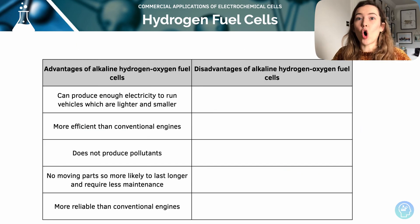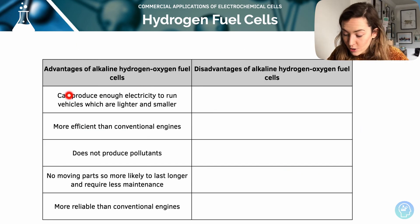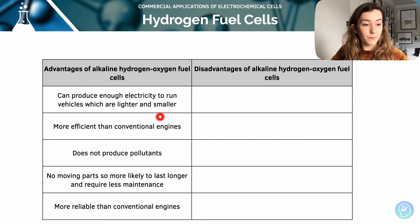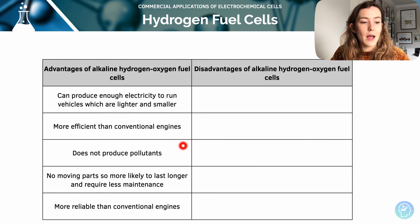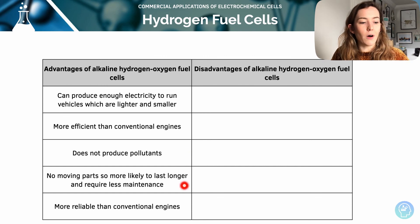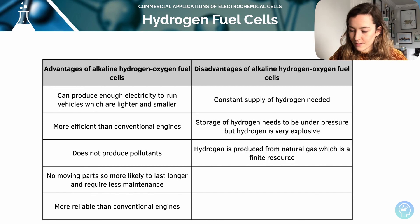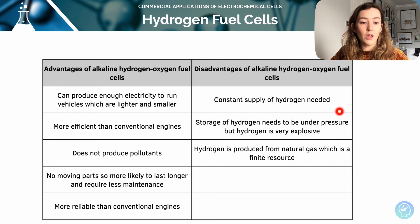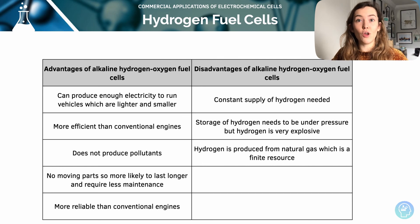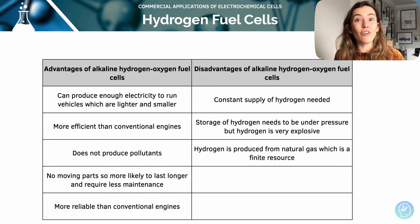Hydrogen fuel cells have many advantages: they can produce enough electricity to run vehicles that are lighter and smaller; they are more efficient than conventional energy sources; they don't produce pollutants — only water is produced; there are no moving parts, so they're likely to last longer and require less maintenance; and they are more reliable than conventional energy sources. Disadvantages include: a continuous supply of hydrogen is required; hydrogen must be stored under pressure and is very explosive — as shown by the squeaky pop test; and hydrogen is typically produced from natural gas, which is a finite resource.